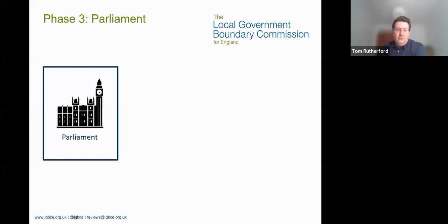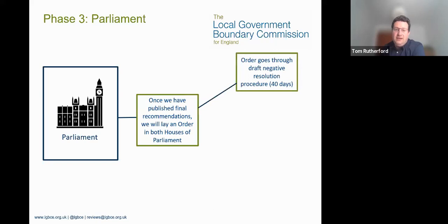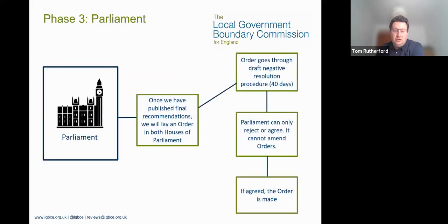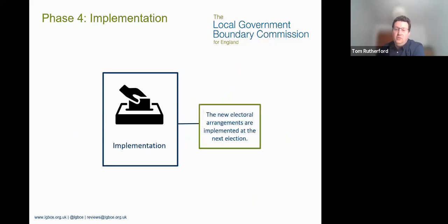After we publish our final recommendations, we turn them into law by presenting them to parliament. We lay an order in both houses for scrutiny — it sits there for 40 days and if nobody objects it becomes law. Parliament can't amend our orders; it can only reject or agree them as a whole. None of our orders have been rejected since LGBC was set up in 2010, so we're very optimistic the parliamentary process will be smooth. The new electoral arrangements will be implemented at the Essex county elections in 2025.